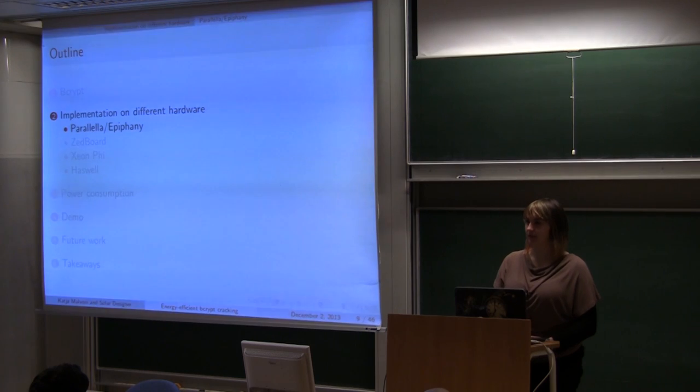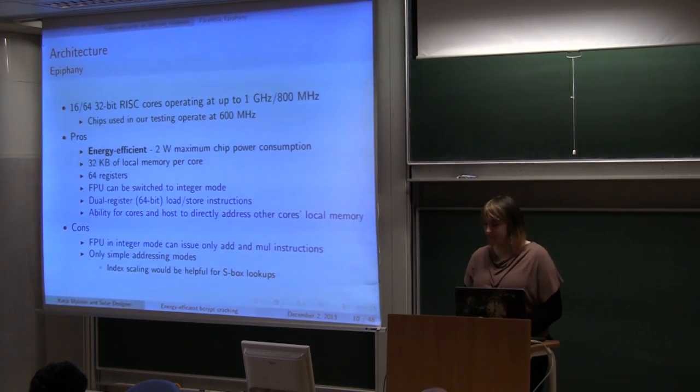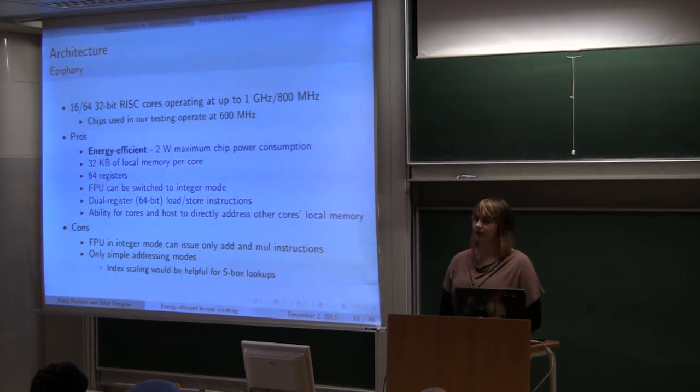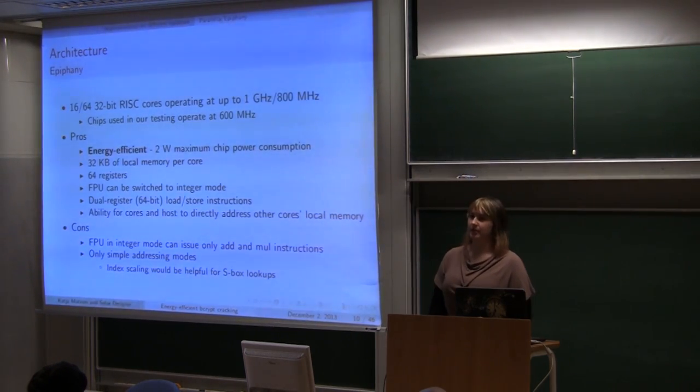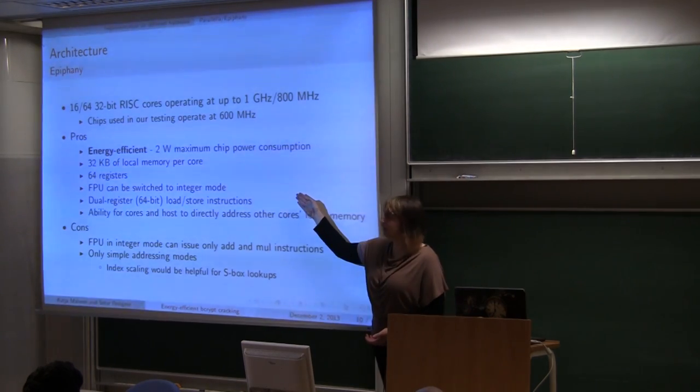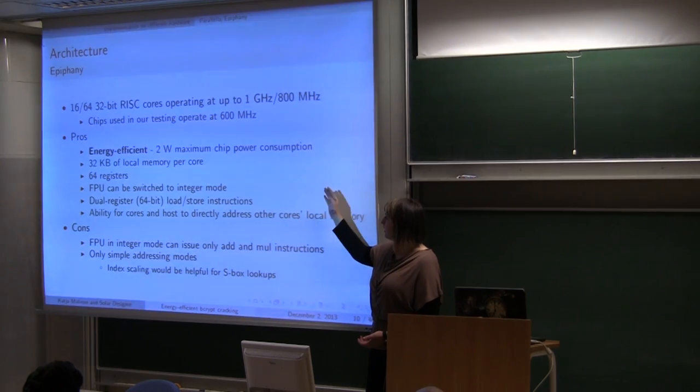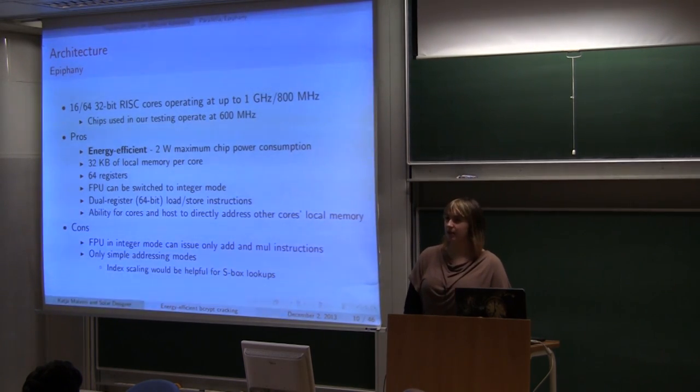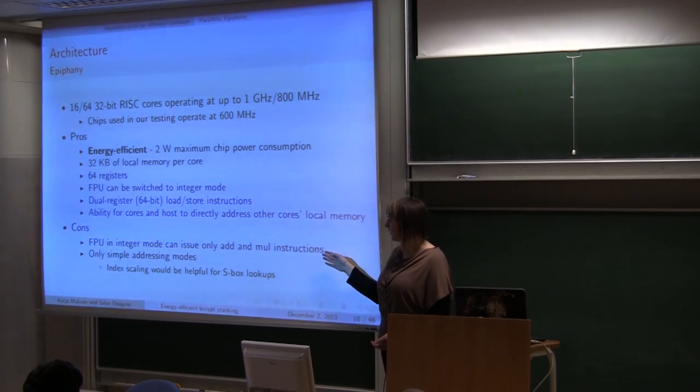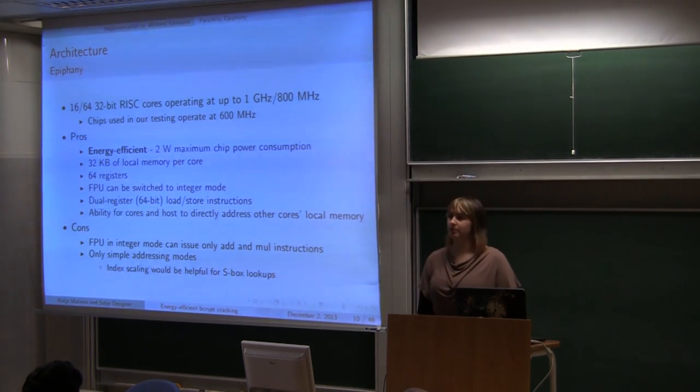The first implementation I will be talking about is on Epiphany chip, which is part of Parallella board. Epiphany architecture is very friendly to Bcrypt because of Bcrypt's sequential nature. And it's also energy efficient. It has 32 kilobytes of local memory, which is more than enough to storing 4 kilobytes of S-Boxes and some bit more for P-Box. There are also 64 registers, floating point unit in integer mode, load, store instructions that load and store double words. And it's interesting that it's possible to directly address core's local memory.